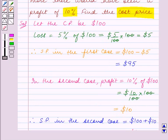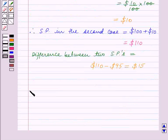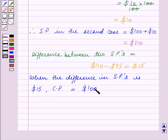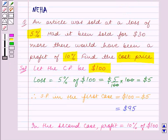We had assumed the cost price to be $100, so when the difference in selling prices is $15, cost price is equal to $100. In the question we are given that the difference in the selling prices is $30 and we have to find